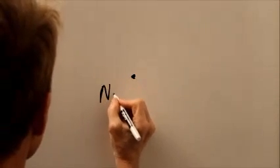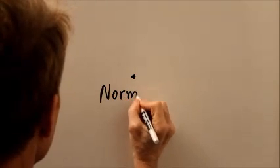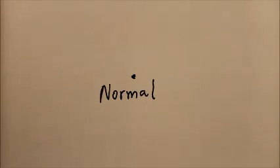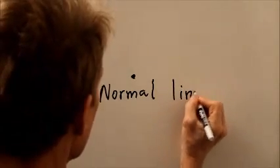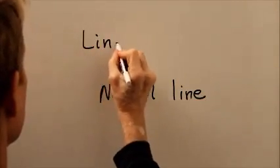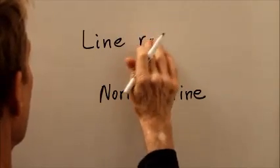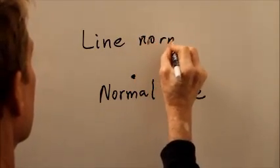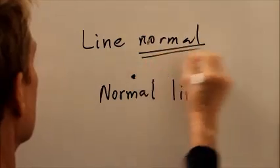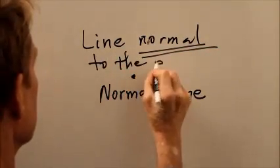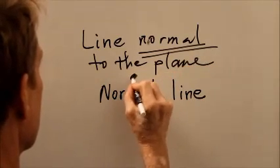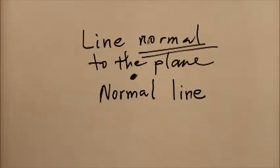We also sometimes call a line that passes through a plane perpendicular to that plane a normal line, or a line normal to the plane. Right at that point, that little dot. So again,